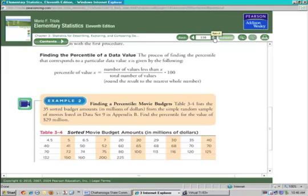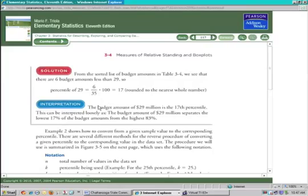Now, if we go to the next page, you can see that they actually work this out for you. And notice their interpretation. The budget amount of $29 million is the 17th percentile. Now, this can be interpreted loosely. The budget amount of $29 million separates the lowest 17% from the highest 83%. Now, that's important as we go along that you comprehend that when you think about the total percentage, if you notice these things add up to 100%. But they're saying that score separates those.